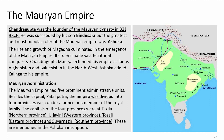Regarding Mauryan administration: the Mauryan Empire had five prominent administrative units besides the capital, Pataliputra. The empire was divided into four provinces, each under a member of the royal family. The capitals of the four provinces were Taxila in the northern province, Ujjain in the western province, Tosali in the eastern province, and Suvarnagiri in the southern province. These are mentioned in the Ashokan inscriptions.